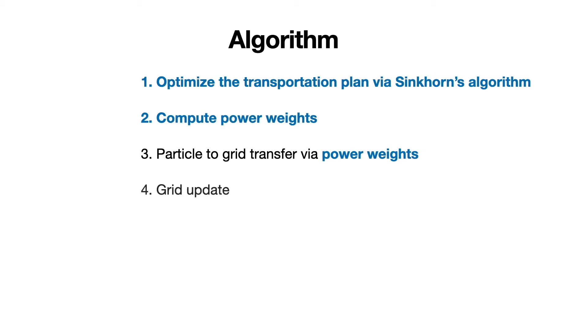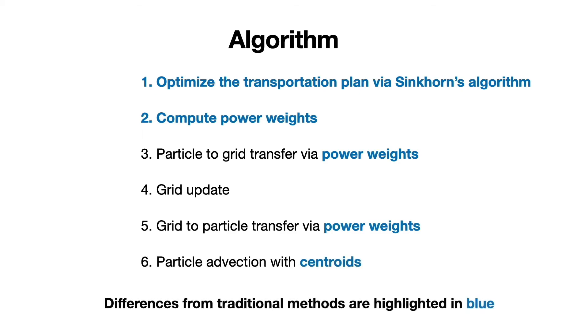Our algorithm can be seamlessly incorporated into a traditional fluid solver. Here we summarize our algorithm. At the beginning of each time step, we calculate the transportation plan using Sinkhorn's algorithm. Next, we compute our power weights. Then, we transfer physical quantities to the grid, and transfer back to particles after updating grid velocities. Finally, we advect particles with their velocities and centroids.